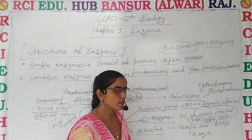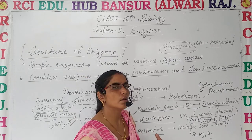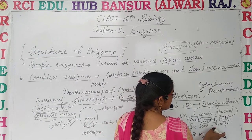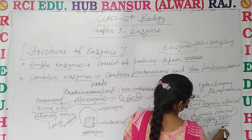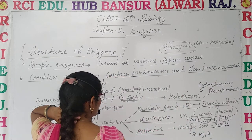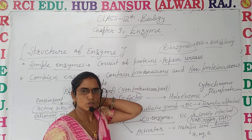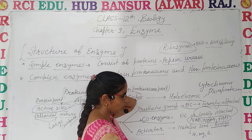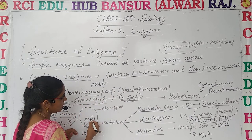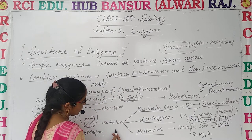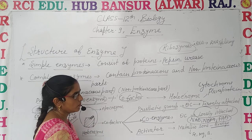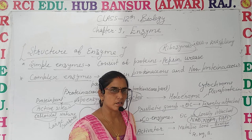The third type of co-factor is the activator. The activator consists of metallic ions — this is a non-protein part. These metallic ions have a main function of forming a bridge. They are loosely or strongly attached and form a bridge with the apo-enzyme. These are known as activators.